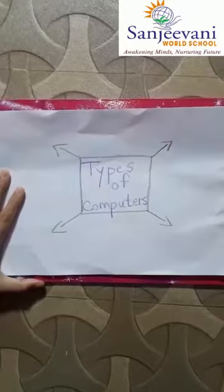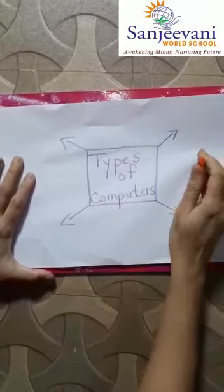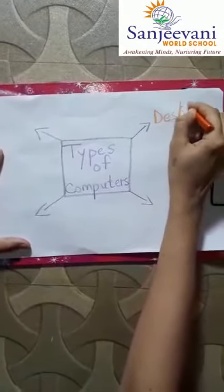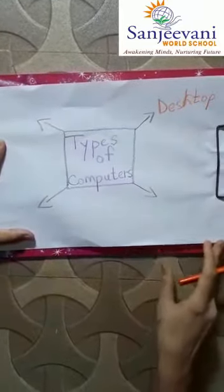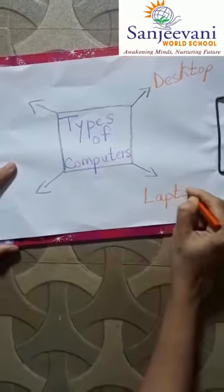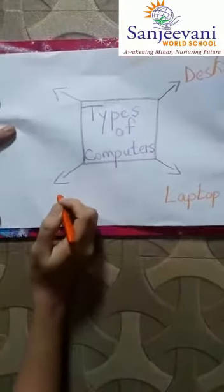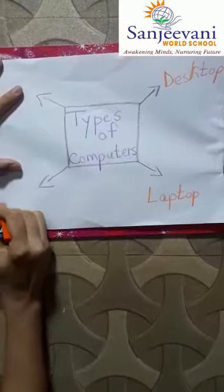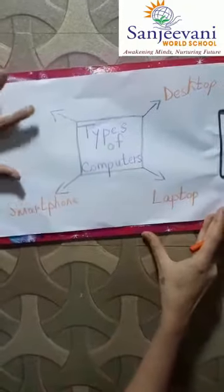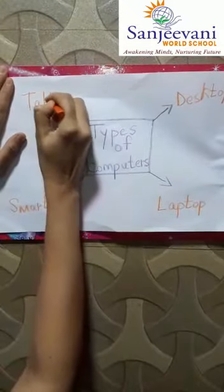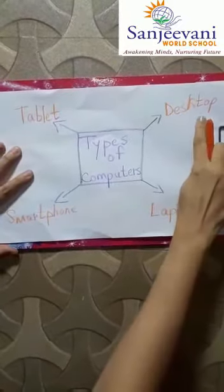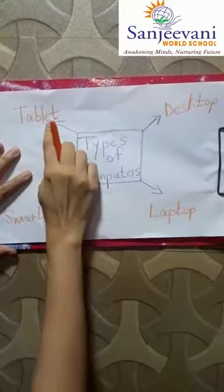Now we will write the four different types of computers. First: Desktop. Next: Laptop. Then here we will write Smartphone — a smartphone is a mobile phone. And the last one is a Tablet, which is also called a tab. So these are the four types of computers: Desktop, Laptop, Smartphone, and Tablet.